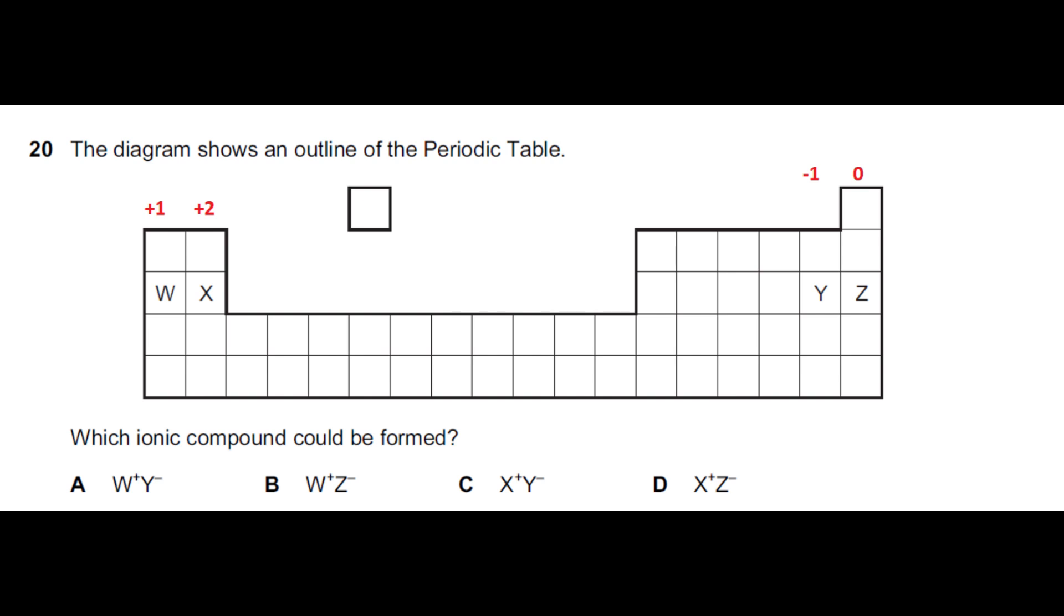Now you can see we have two chances: if W is forming a compound with Y it should be WY, and if X is forming a compound with Y it should be XY2. We don't see any option with XY2, so we see an option with W and Y. So Alpha is the correct answer for this question.